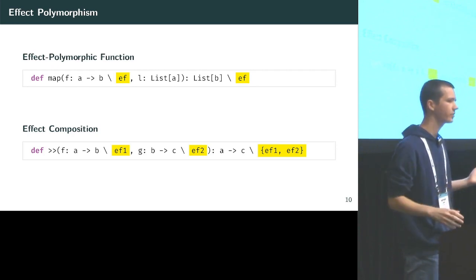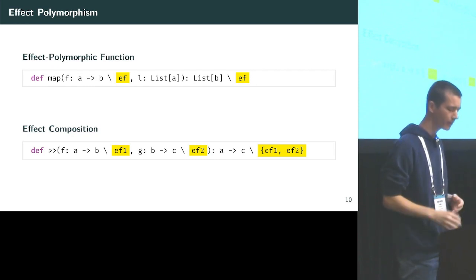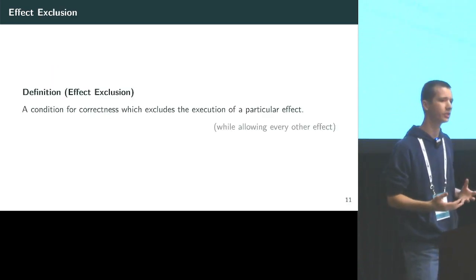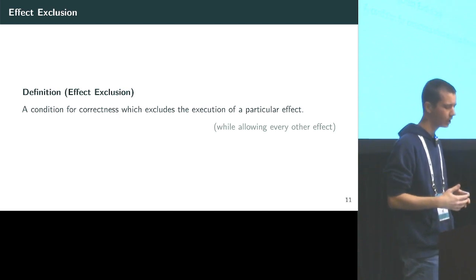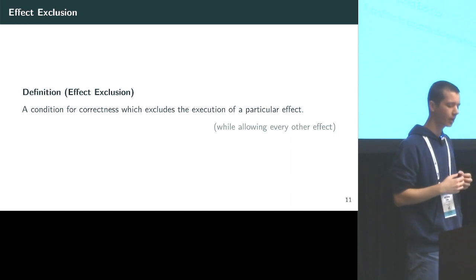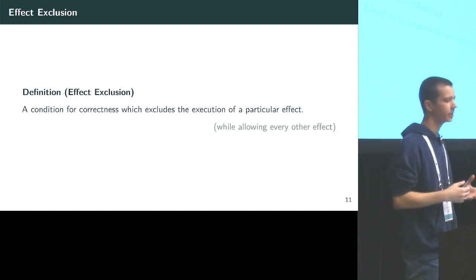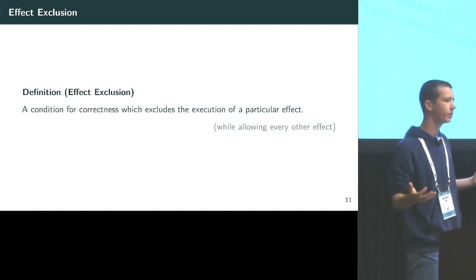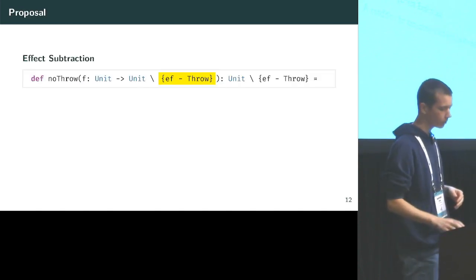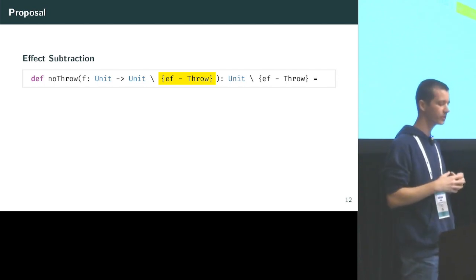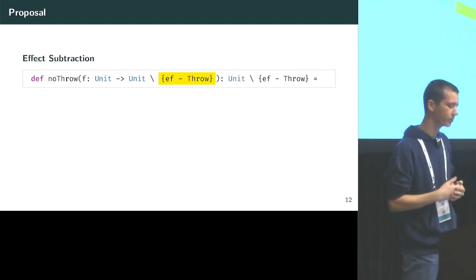This is all possible with most effect systems today, but it's not enough. There's a subtlety to our definition of effect exclusion: it's a condition that excludes the execution of a particular effect, but implicitly we want to allow every other effect. That's not expressible simply with unions of sets of effects. What we really want is something like effect subtraction — the ability to say we can have any effect except a particular one.